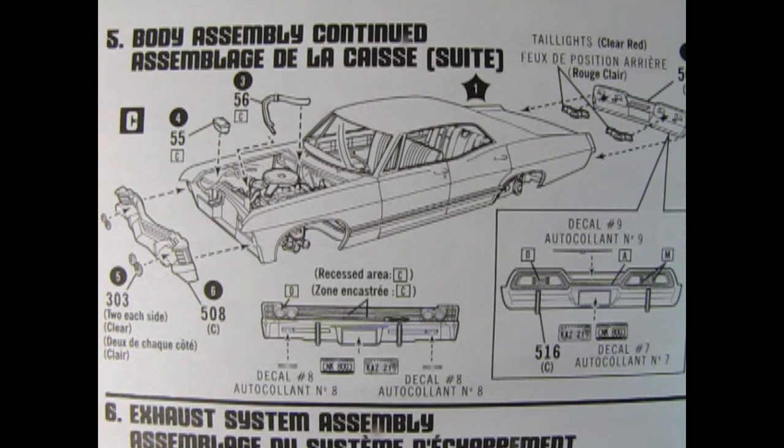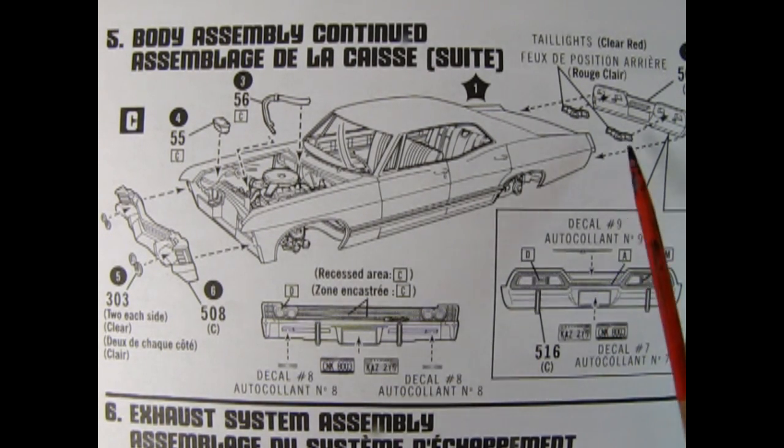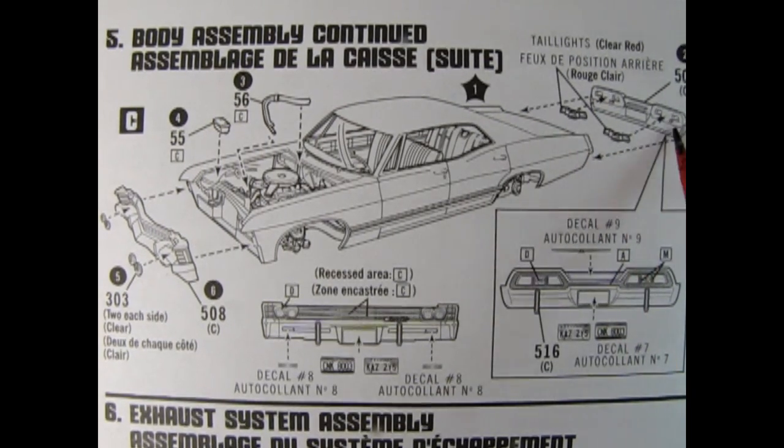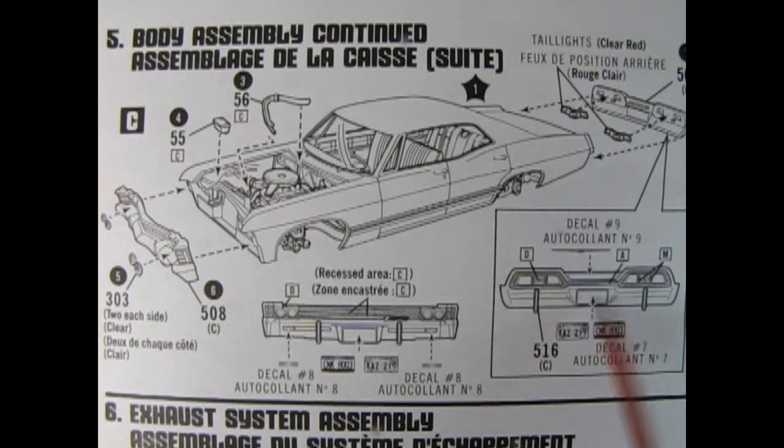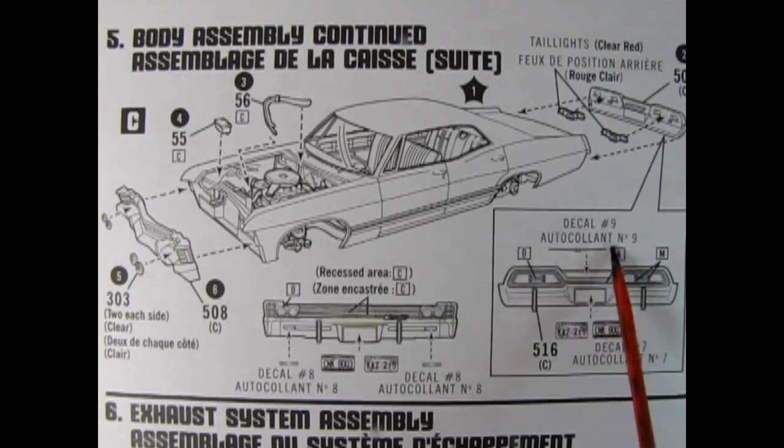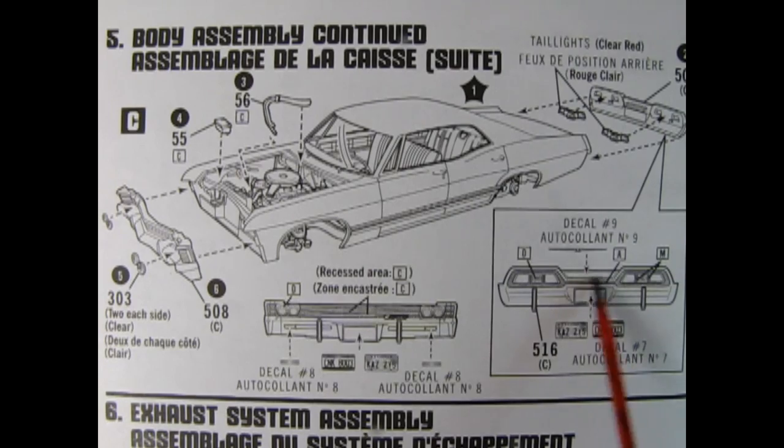Step five, body assembly continued. We continue on with our body assembly by putting in the rear tail lights into the bumper. Here we have our choice of which license plate decal we want to install as well as the Chevrolet emblem which gets attached up here. We also have our paint call out for the rear tail lights as well as the backup lights.